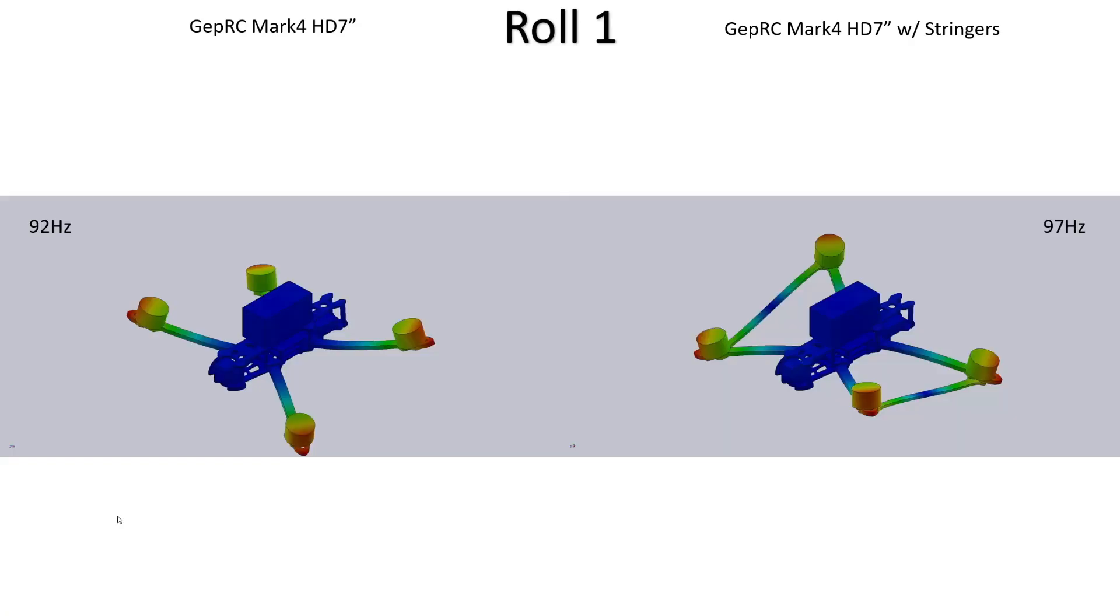So if we start now looking at the roll modes one by one this is the first mode. Without the stringers it's as you would expect, the motors moving alternately exactly the same as what you would have seen before if you watched the previous video of five inch versus seven inch.